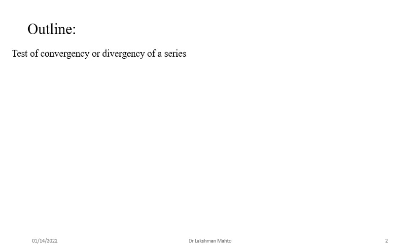Coming to the outline of today's lecture, first I would talk about the test of convergency or divergency. Whenever I say convergency, it includes both things — divergency or convergency both. If the series is convergent, we will say it is convergent. If the series is divergent, we will say it is divergent. So convergency includes both things, and that is the meaning of the test of convergency.